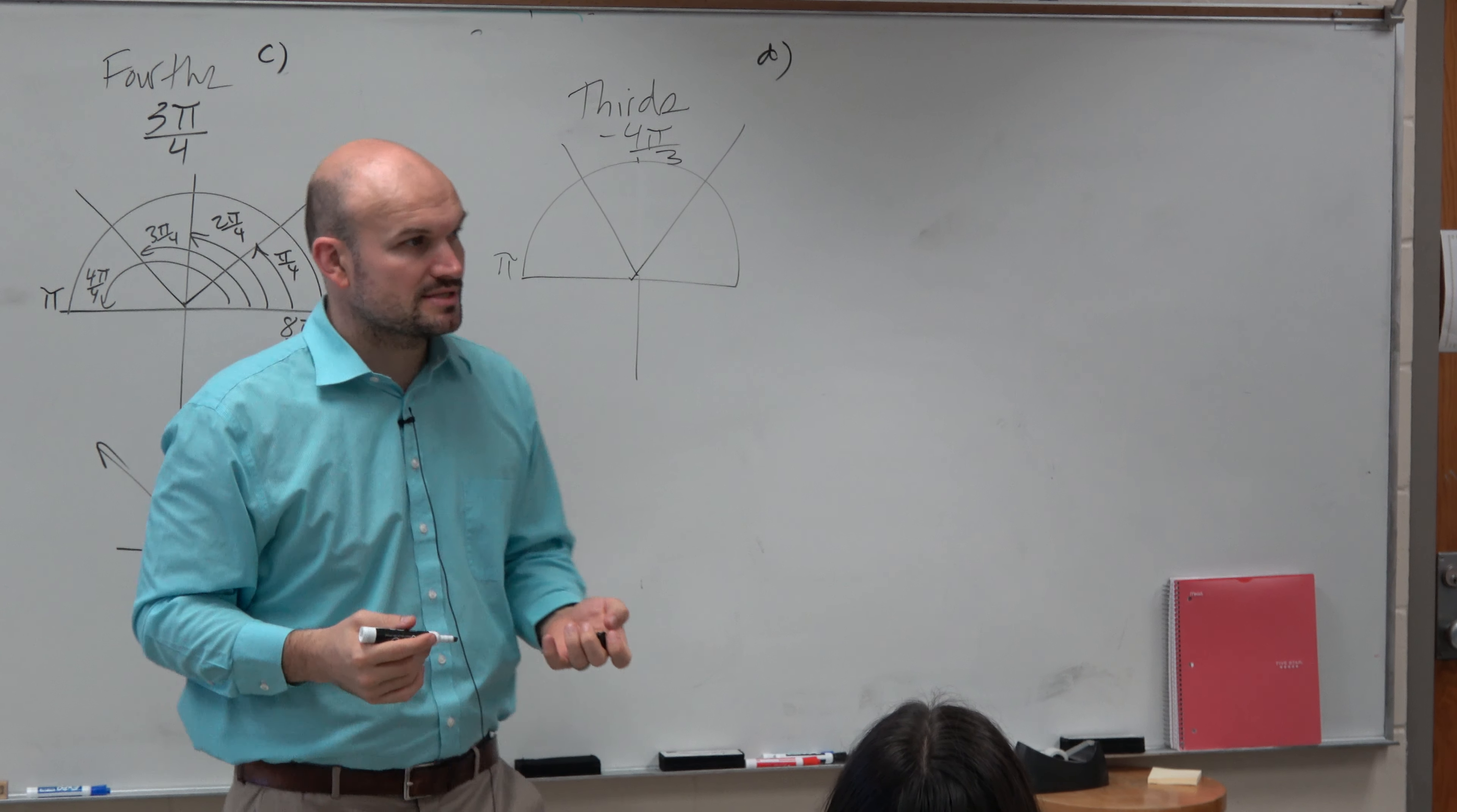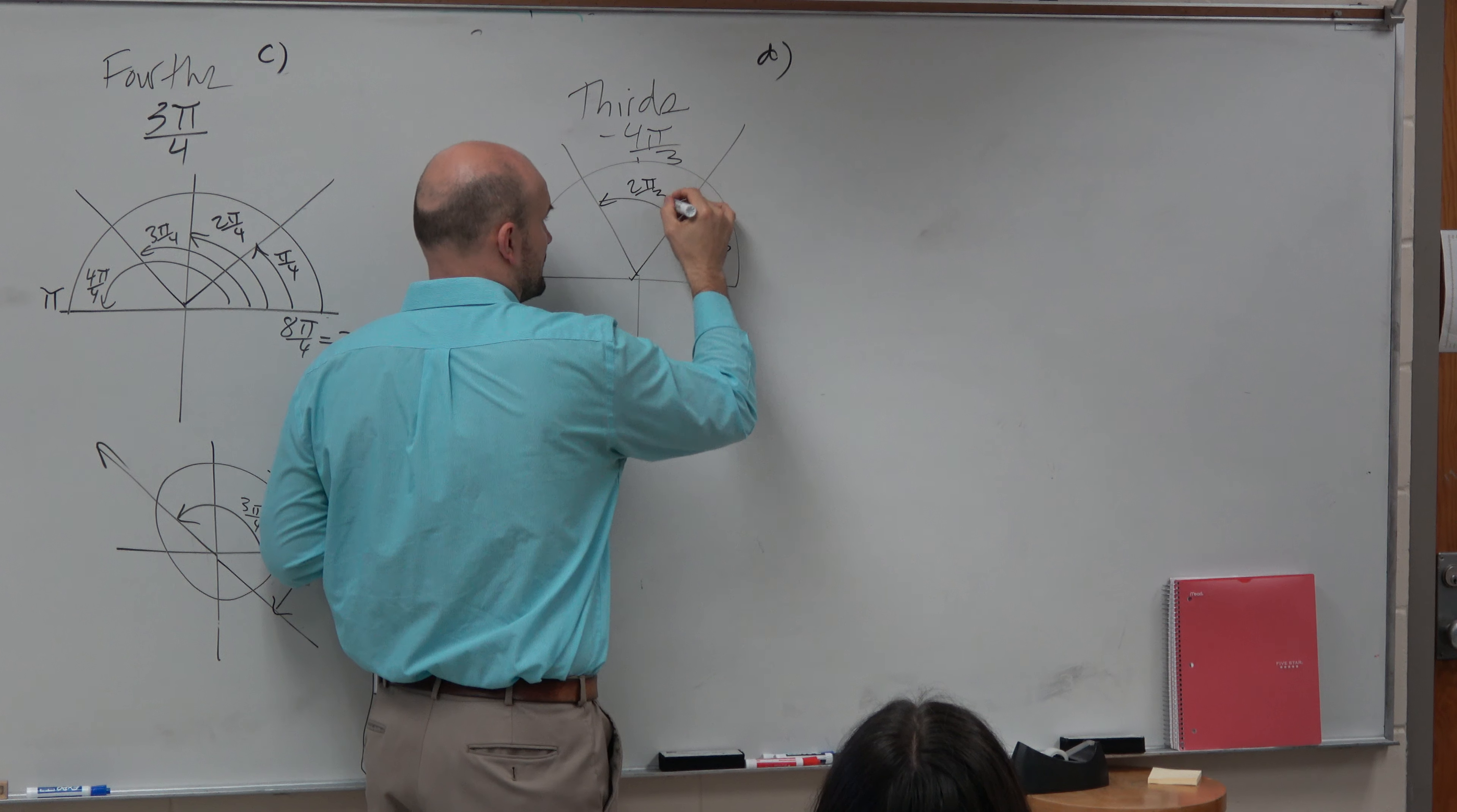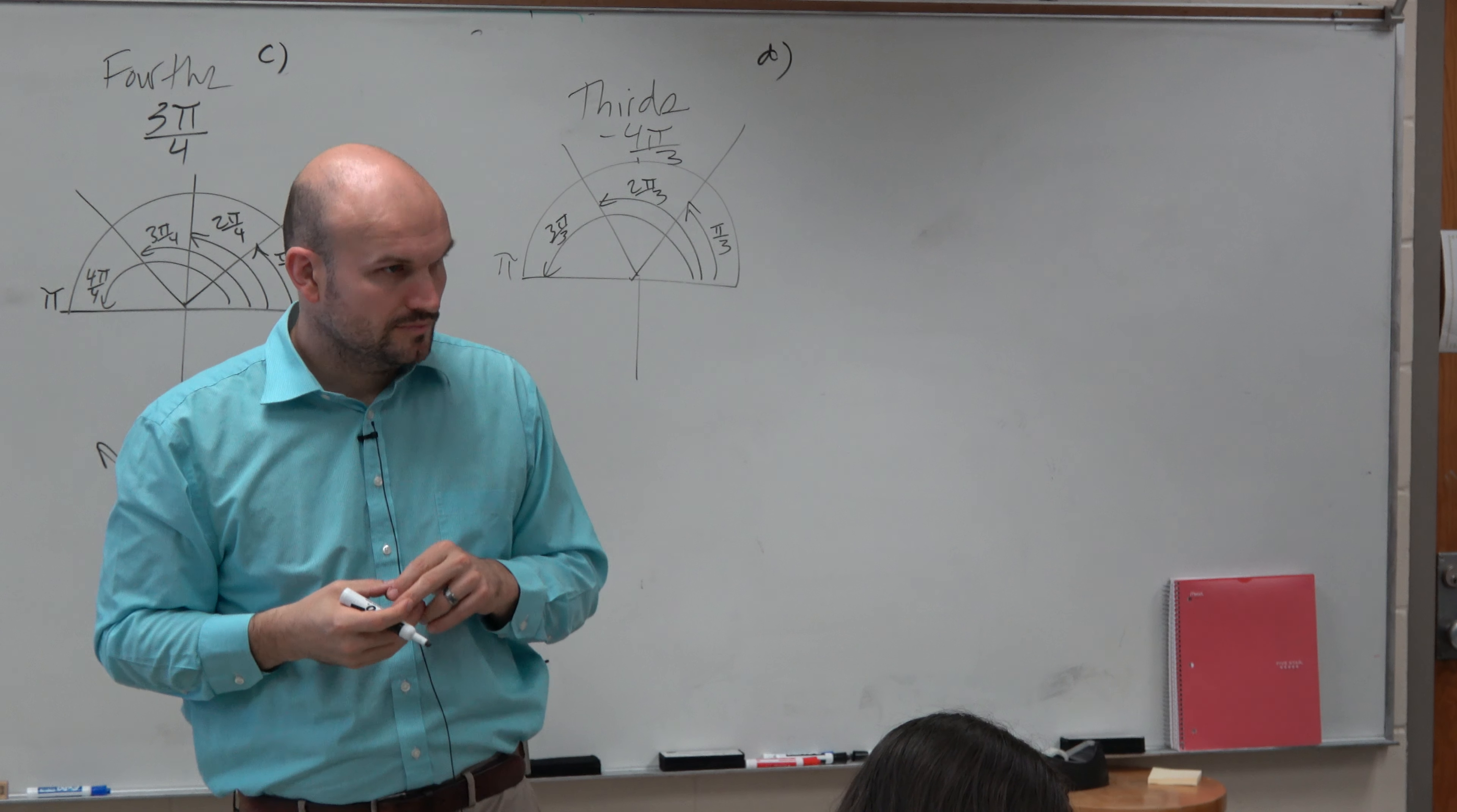I'm going to break this up into three parts. So now we can say that here is π over 3, here is 2π over 3, and then here would be 3π over 3, right?